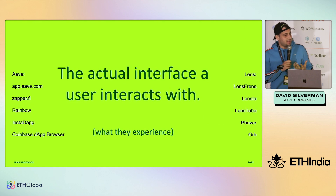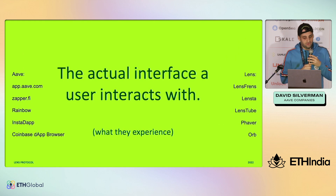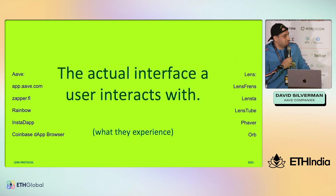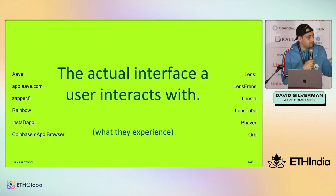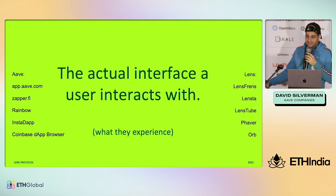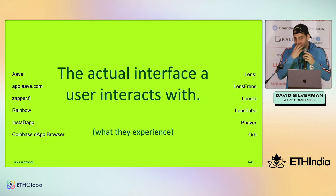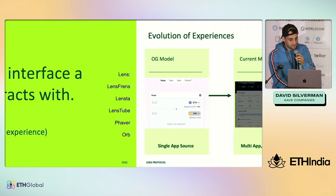Because at the end of the day, we have experiences. There are tons of different applications, but they all want to have different UIs. For Aave, you can go to app.aave.com, Zapper, Rainbow, Instant App, Coinbase. For Lens, there are a ton live today — Lens Friends, Lenssta, LensTube, Favor, Orb, Lensster. There are plenty of different UIs that are all using the same contracts under the hood, and we really think that this is the future of Web3 applications.